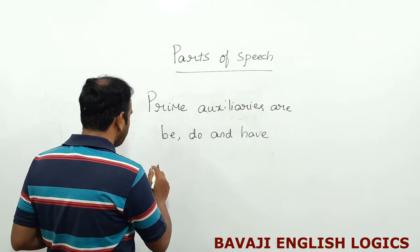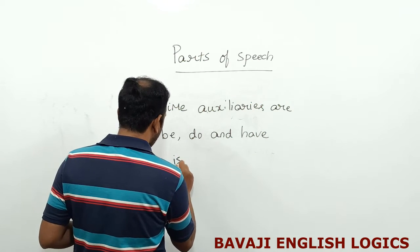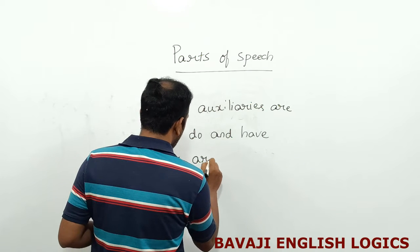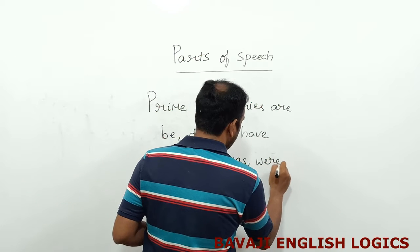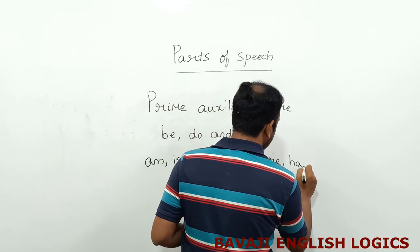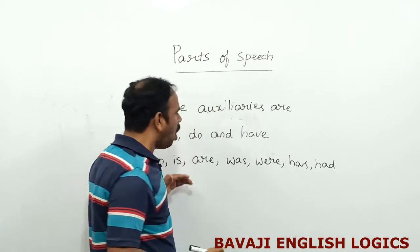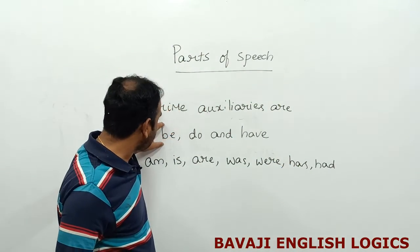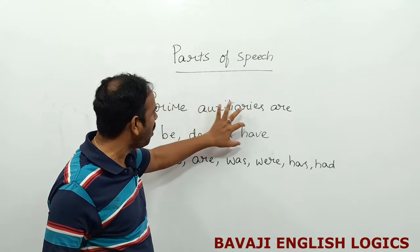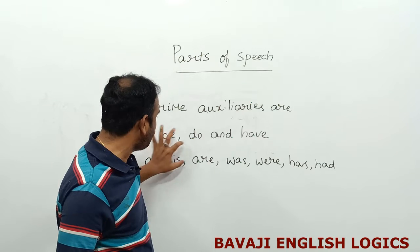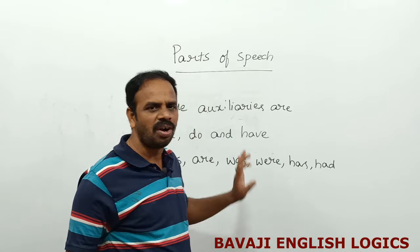What are auxiliary verbs? Auxiliary verbs are am, is, are, was, were, has, and had. So we call be, do, and have as prime auxiliaries. And am, is, are, was, were, has, had are called auxiliaries.